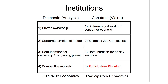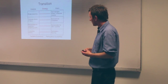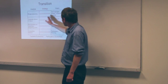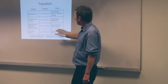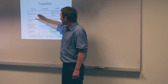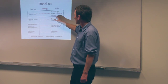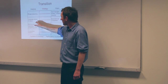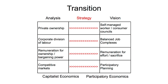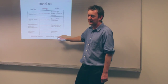Just a brief word on transition. Essentially we're talking about the transition from private ownership to self-managed worker and consumer councils; from corporate division of labour to balanced job complexes; from remuneration for ownership and bargaining power to remuneration for effort and sacrifice; and from competitive markets to participatory planning. That essentially is the revolution — the transition from capitalist economics to participatory economics.